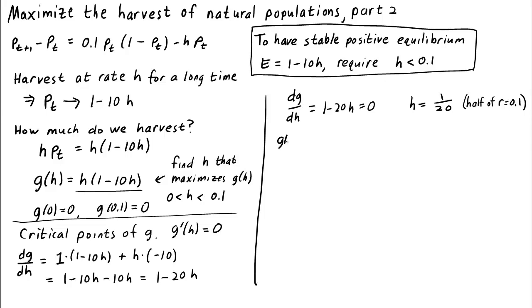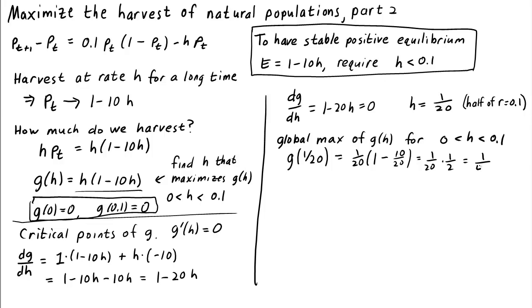We're interested in the global max of G for H being between 0 and 0.1. We already tested the end points. We saw that G is 0 at the end points. The other possibility is the critical point, so let's see what G is at the critical point. G of 1/20 is 1/20 times 1 minus 10/20, which is 1/20 times 1/2, which is 1/40. 1/40 is larger than 0, so therefore 1/40 is the global maximum.